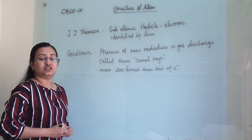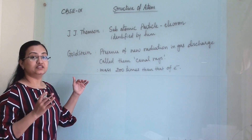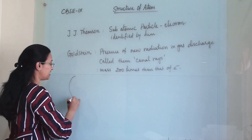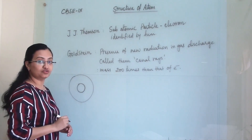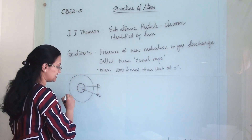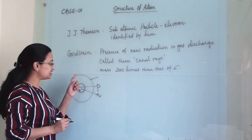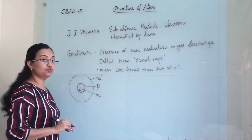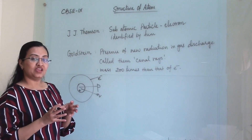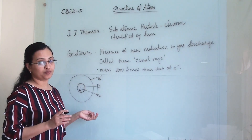We will first discuss two scientists who, after Dalton's theory, discovered two subatomic particles of atom. A subatomic particle is a particle within the atom. In the nucleus, proton and neutron are present, and because of the positive charge in the nucleus, the electron rotates around it. These are all subatomic particles because they exist within the atom.